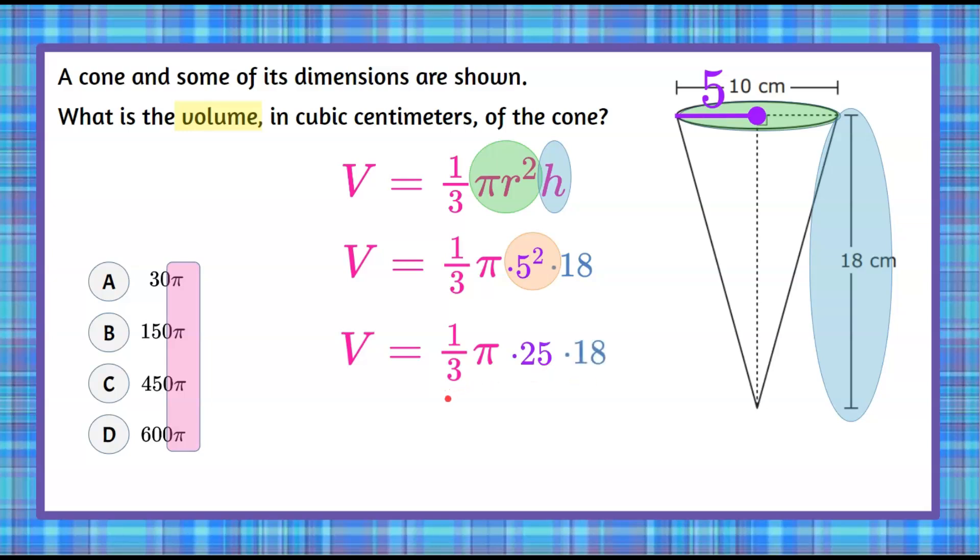Now you don't even need a calculator for this. We're going to do one-third of 18. One-third of 18 is 6. And then 6 times 25 is 150, and we have our pi. So 150 pi is our volume, and that is answer choice B.